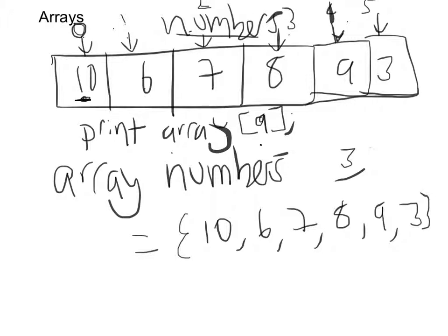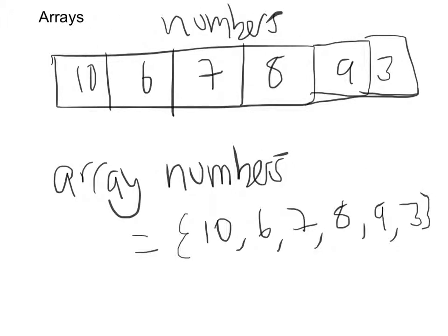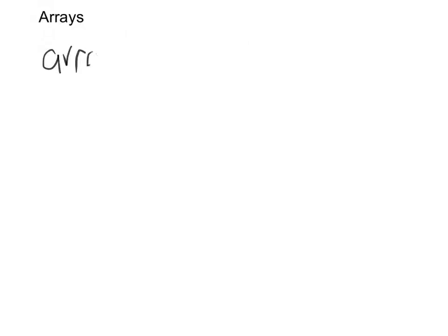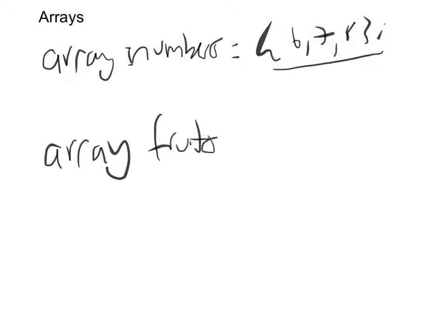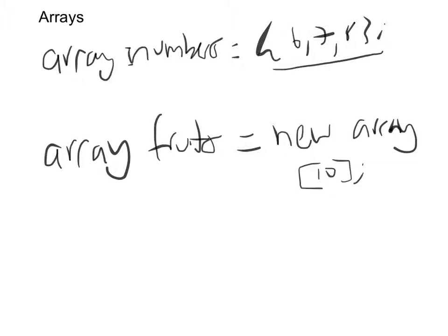In some programming languages, you can declare an array without immediately giving it values. Instead of initializing with a set of numbers upfront, you can write something like: 'array fruits = new array' with a specified number of elements — say 10, or 3 to keep it simple on screen.